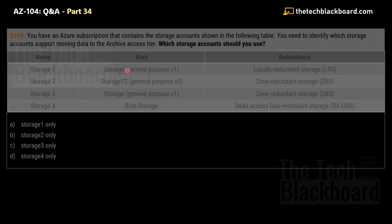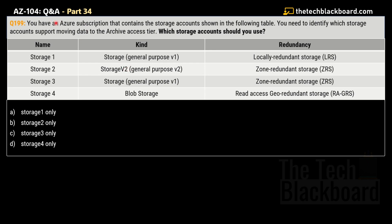Question 199. You have an Azure subscription that contains the storage accounts shown in the following table. You need to identify which storage account supports moving data to the archive access tier. Storage 1 is General Purpose V1 (LRS), Storage 2 is General Purpose V2 (ZRS), Storage 3 is General Purpose V1 (ZRS), and Storage 4 is Blob Storage (RA-GRS).